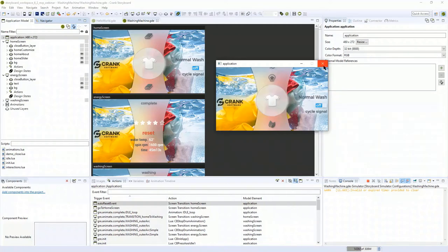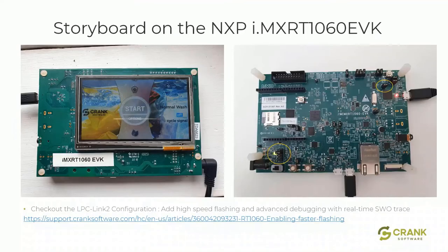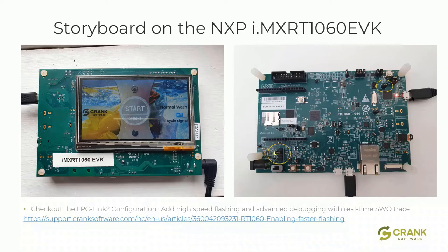We're running on the board. We've used a configuration called the LPC Link 2, which sets up the board in a special mode giving much faster flashing and some additional trace options. We'll be using the SWO — the single wire output trace — for real-time trace output while debugging the application. There's an application note on our website and a couple of jumper changes required on the board. Of note, you need to power this using the external power configuration, not just a USB connection.